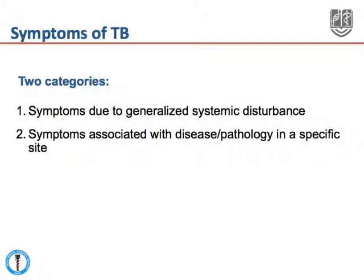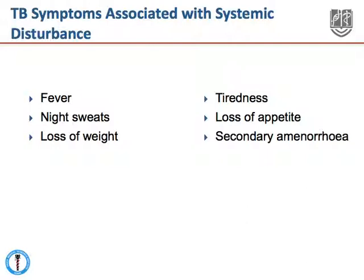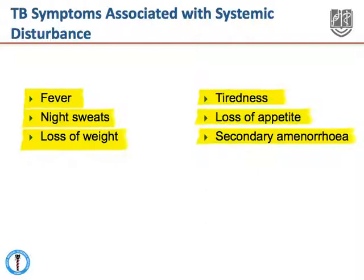The symptoms of tuberculosis can broadly be divided into two categories: those symptoms due to a generalized systemic disturbance, and those symptoms associated with disease or pathology in a specific site or organ. The symptoms associated with a generalized systemic disturbance include fever, night sweats, loss of weight, tiredness, loss of appetite, and many other things including secondary amenorrhea.